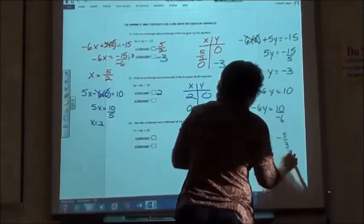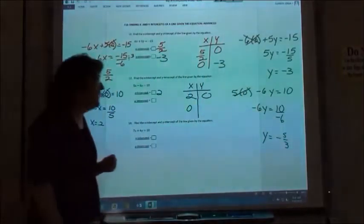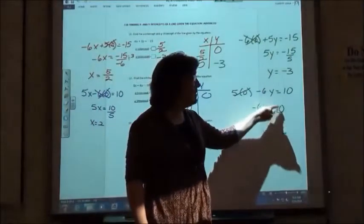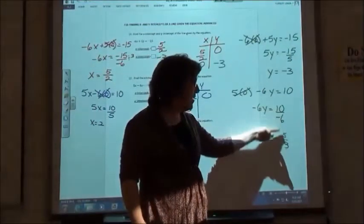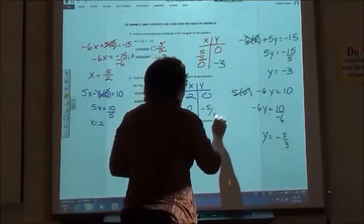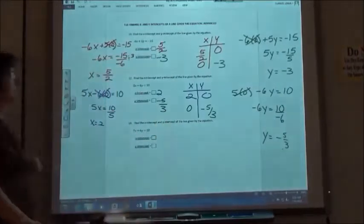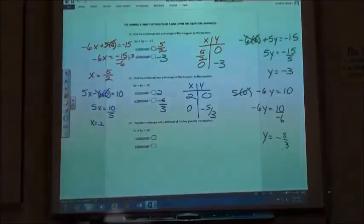Change it to an improper fraction, because we know in algebra we never like that mixed number. Oh, negative 3 fifths. 5 thirds it should be. Oh, 5 thirds. Right? 5's on top? Right? If I divide these by 2, 10 divided by 2 is 5, and 6 divided by 2 is 3. Yeah, so negative 5 thirds. So my x-intercept was 2. My y-intercept was negative 5 thirds.